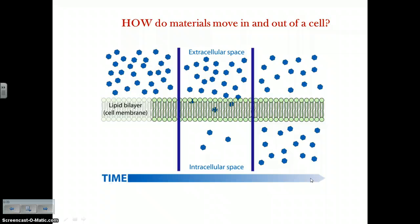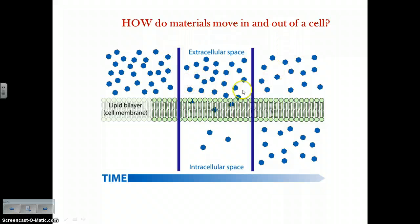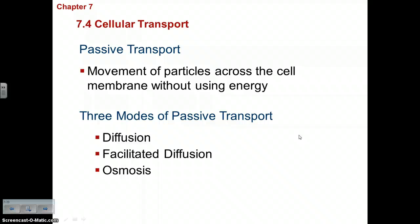The phospholipids are constantly vibrating against one another, creating little openings in the bilayer so materials can slide in or out of the cell. Extracellular space means outside the cell; intracellular space means inside the cell. Molecules are able to diffuse right across the cell membrane until they reach a state of dynamic equilibrium.